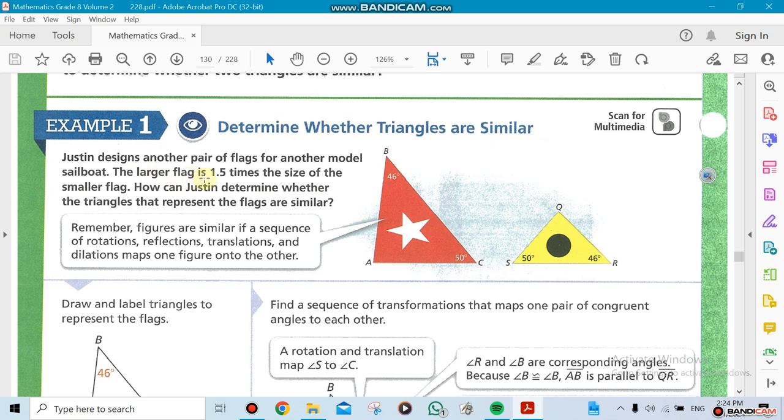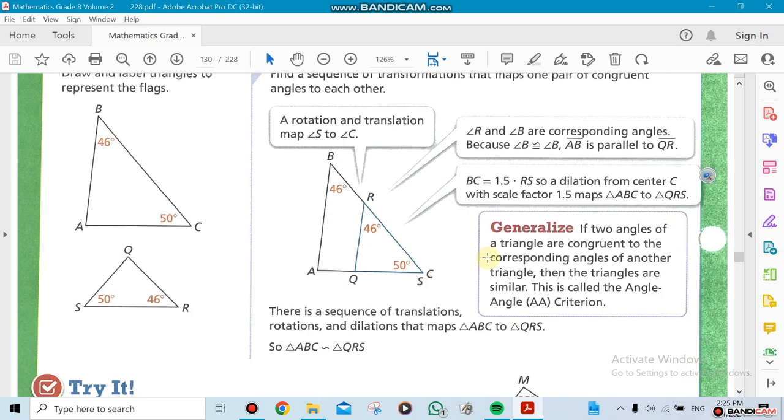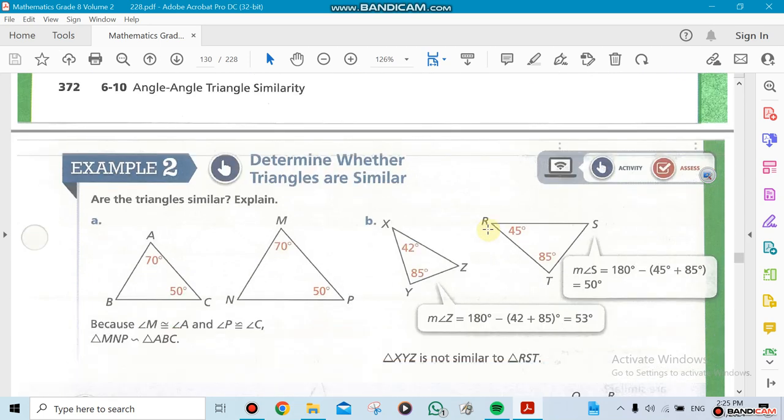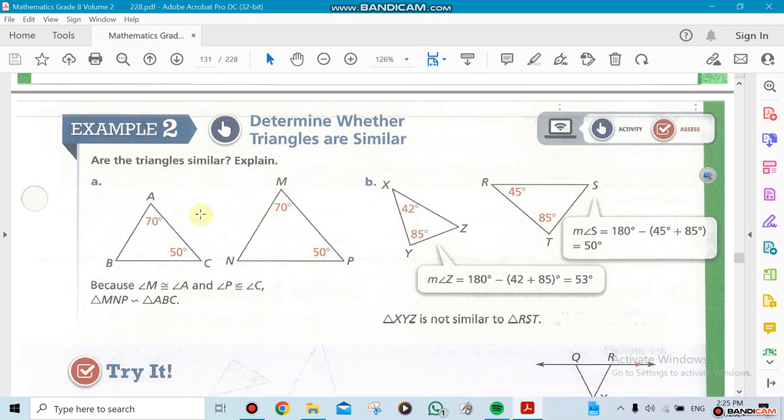Here, for example, look at this, the larger flag is 1.5 times the size of the smaller flag. That means we can see that they are proportional. Even though they don't look the same, they are similar, so they have to be proportional and have the same angles. The angles are very important.